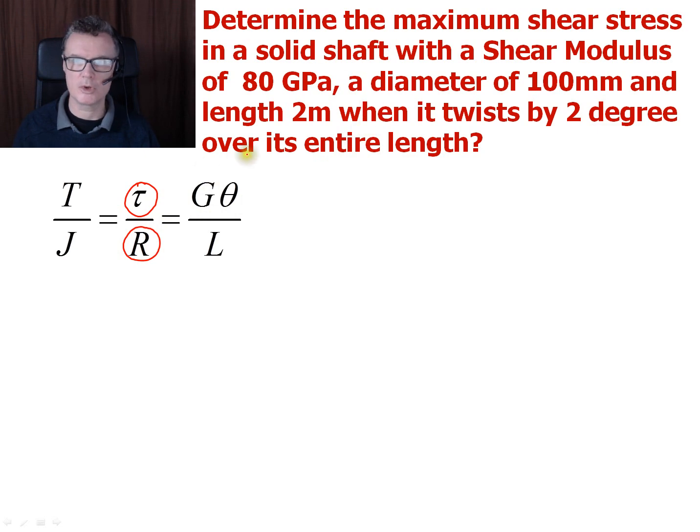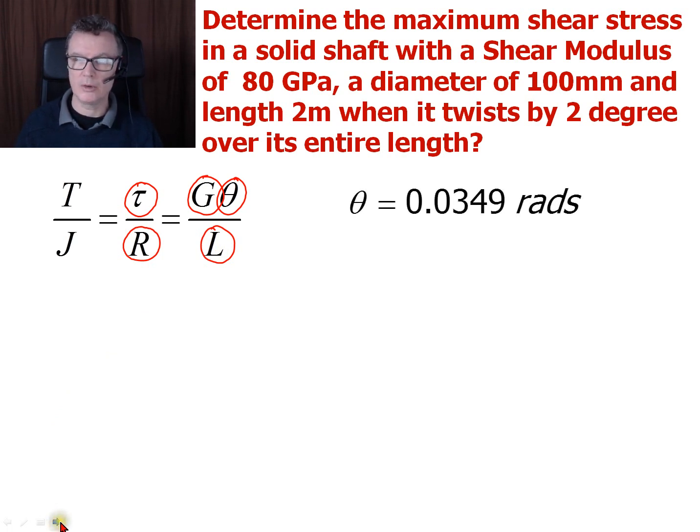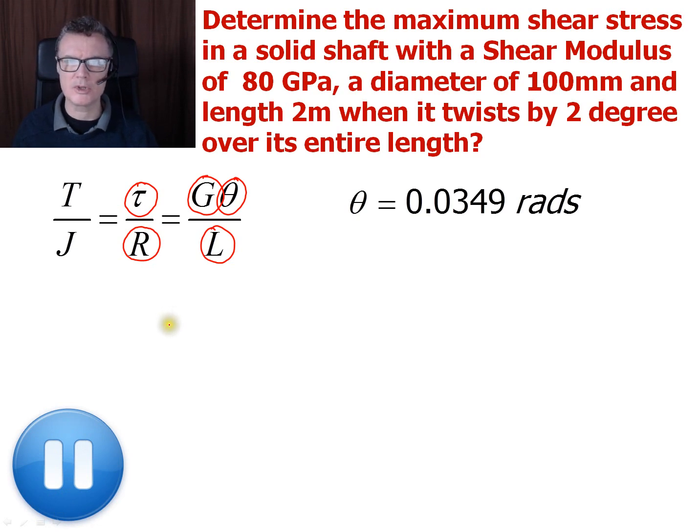And then we want to look at what other information we've got. So we've got the diameter, which of course is going to be the radius rather, which is going to be half the diameter. So we've got this term here. We've got the shear modulus, which is the G. We've got the angle of twist, which we've just calculated, and we've got the length. So we can see that it's going to be these two parts of the Torsion equation that we use. So we look back at our angle of twist in radians.